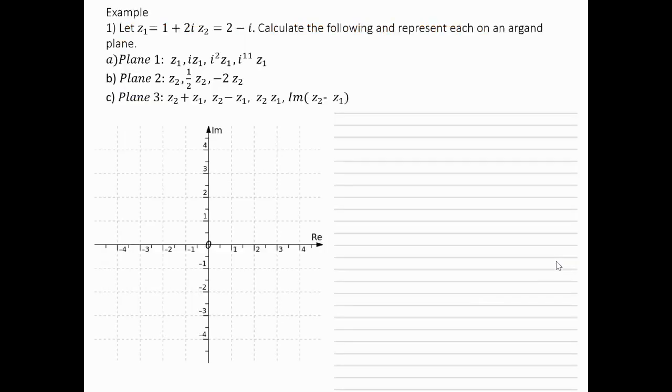We have Z1 equals 1 plus 2i. We're going to see what Z1 looks like. We go 1 across along the real part and then 2 up because that's the imaginary part. So Z1 is 1 plus 2i and I've just put it down on the plane.